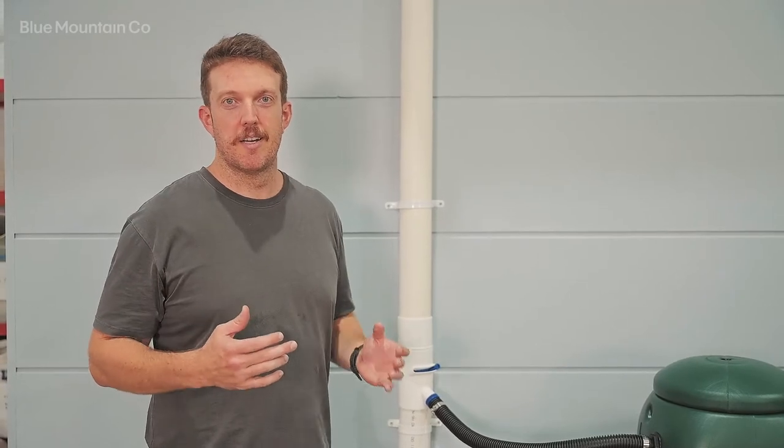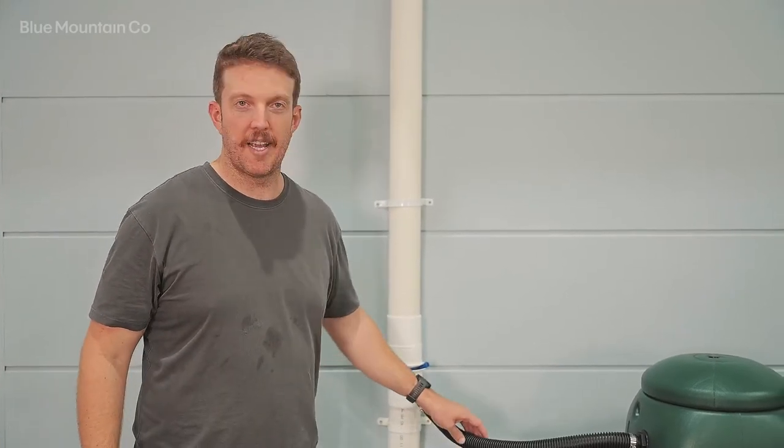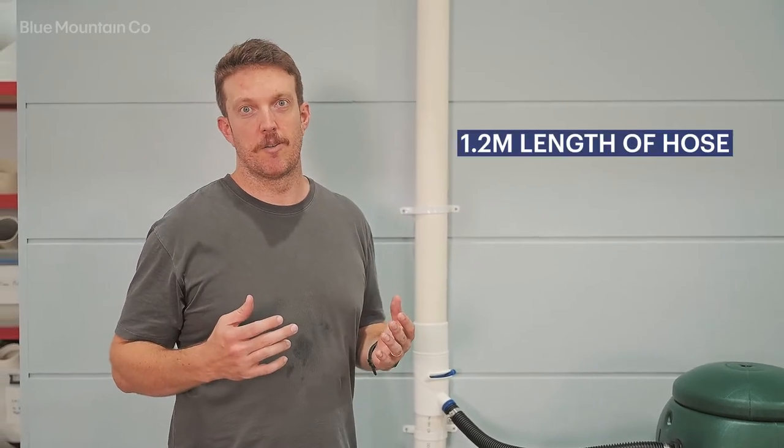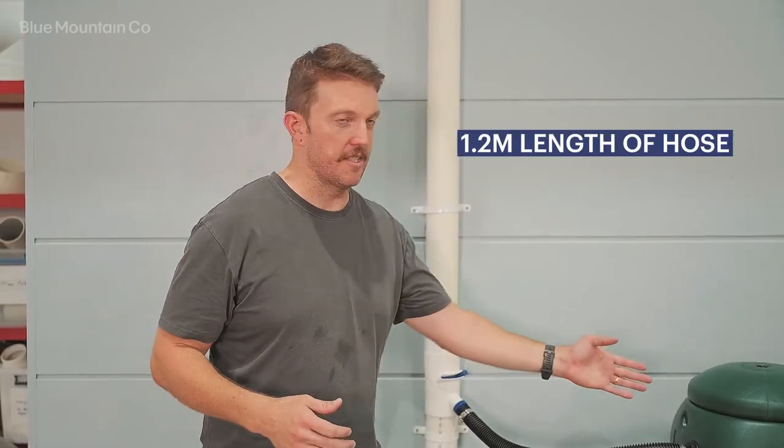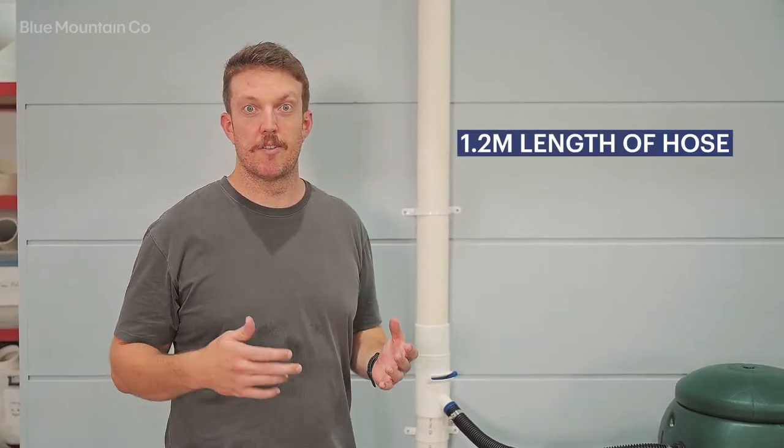The downpipe diverter hose kit comes with 32 millimeter corrugated hose, and it's 1.2 meters long, so this allows a pretty decent reach to connect your downpipe diverter to a barrel.